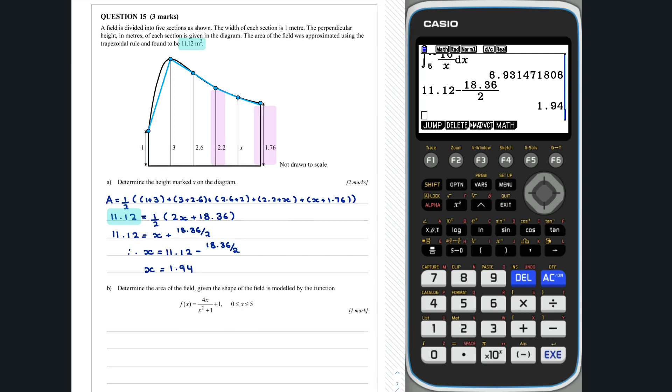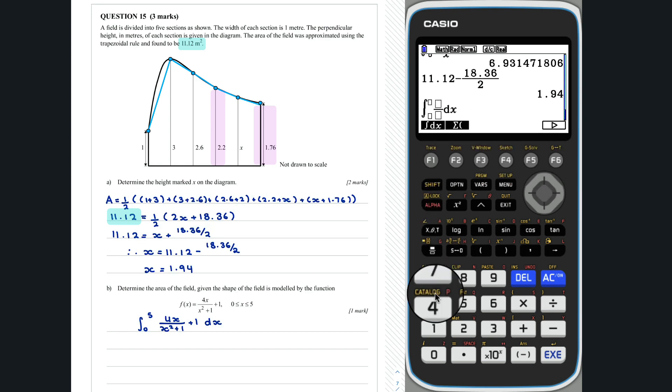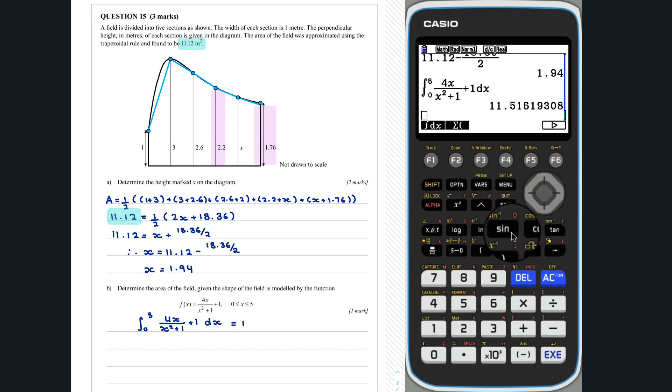Question 15b. The area of the field can be determined by evaluating the integral from 0 to 5 of 4x all over x squared plus 1 plus 1 dx. Using the run mode. Thus, the area of the field was determined to be 11.516 metres squared.